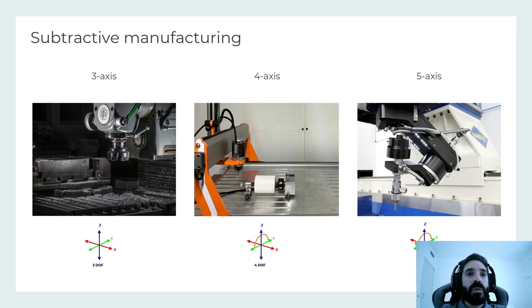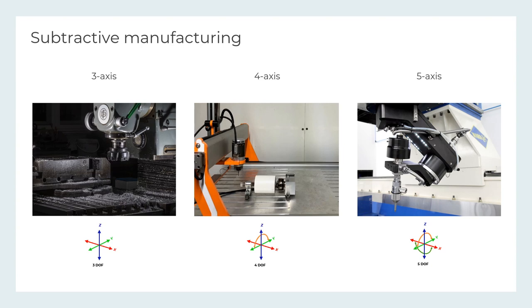Machines with more degrees of freedom have been designed to extend the class of shapes fabricable from subtractive manufacturing. 4-axis machines add rotation around one of the 3 axes, and 5-axis machines include 2 rotation axes. While 4-axis machines can be obtained by extending a 3-axis machine with a rotation tool, 5-axis machines are usually very expensive and require complex planners.